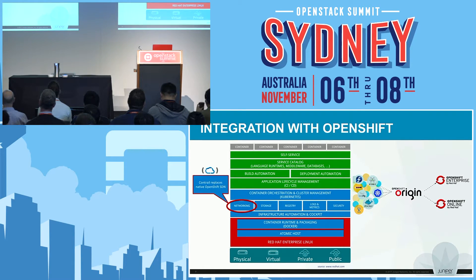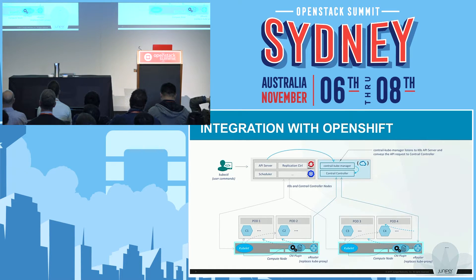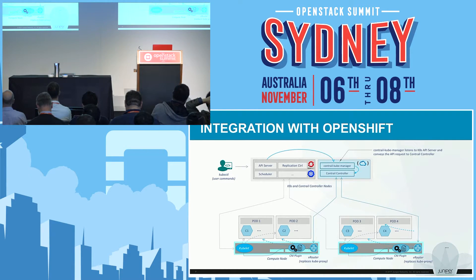We do this integration with Origin, so we can do it with any instance of OpenShift that you're managing yourself — in other words, something that's not OpenShift as a service. OpenShift does all of its container orchestration through Kubernetes, and hence all of the dynamic networking that we need to do for Kubernetes that we implemented for Contrail directly is exactly the same, and it applies to the OpenShift environment.